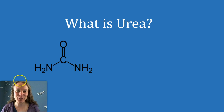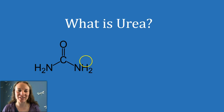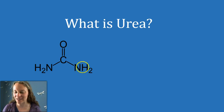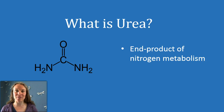One thing I want you to observe about urea is that it's got a lot of nitrogen in it, relatively speaking. You've got these two separate amine groups in it. And urea is the end product of nitrogen metabolism.